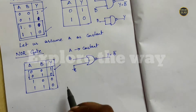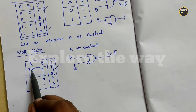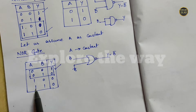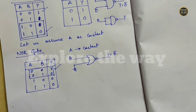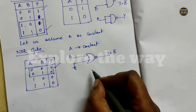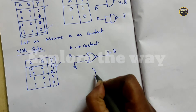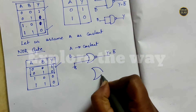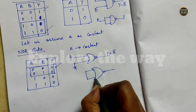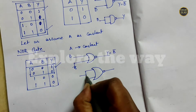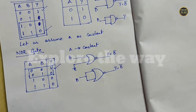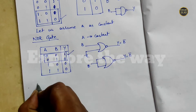One more combination: if both inputs are 0, output is 1, and if both inputs are 1, output is 0. In this case also, when you combine both the inputs it acts like an inverter. The third case is the XOR gate.